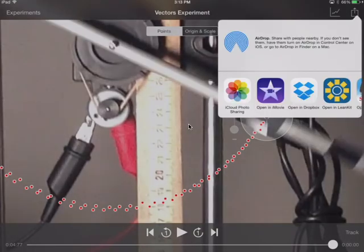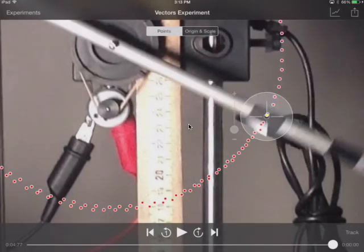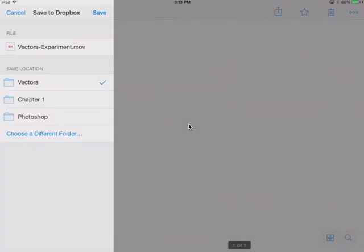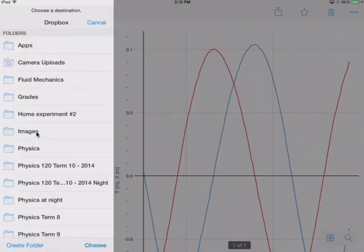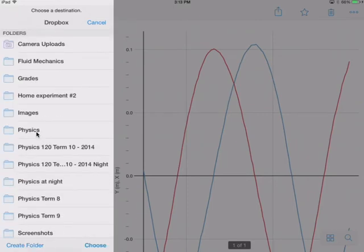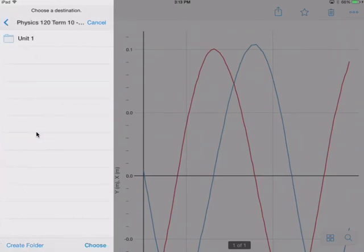You'll see that I can choose Dropbox here. With Dropbox, I can actually go to vectors. I can go and find this particular folder. If for some reason I cannot find the folder, I can go right here. I can choose a different folder. I can go into Physics, Unit 1, Vectors, and then I can place this video in there.